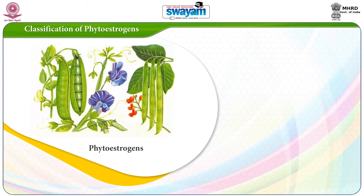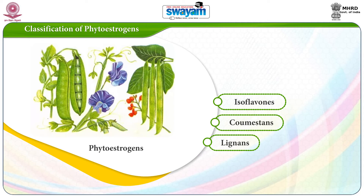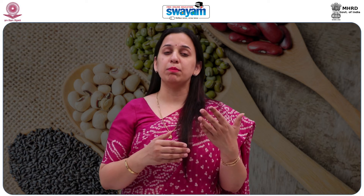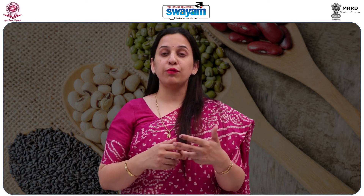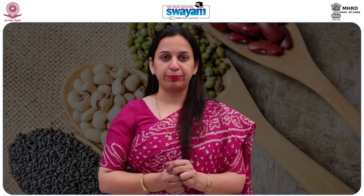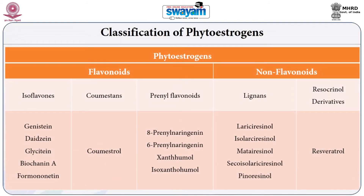The phytoestrogens may be divided into three main classes: isoflavones, coumestans and lignans. The scheme in Table 1 exhibits the various classes of phytoestrogens. However, this may not be an exclusive list as new phytoestrogens may be identified as constituents of food in the future. Phytoestrogens are divided into two main groups, flavonoids and non-flavonoids. Flavonoids are further divided into isoflavones, coumestans and prenylated flavonoids, and the non-flavonoids are classified into lignans and resorcinol derivatives.